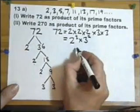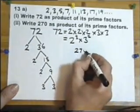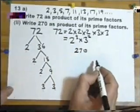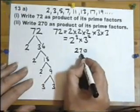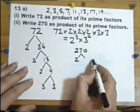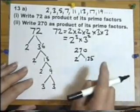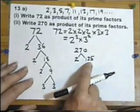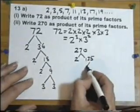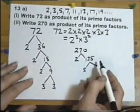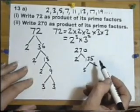OK, let's do 270 as a product of its prime factors. So it's an even number, so I've got 2 multiplied by 135. Well, that's not a prime number, but it ends in a 5, so 5 must go into it. Now,